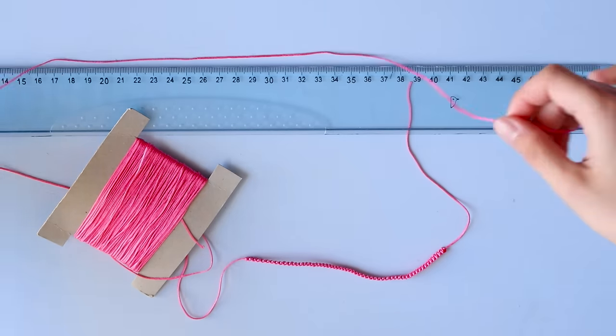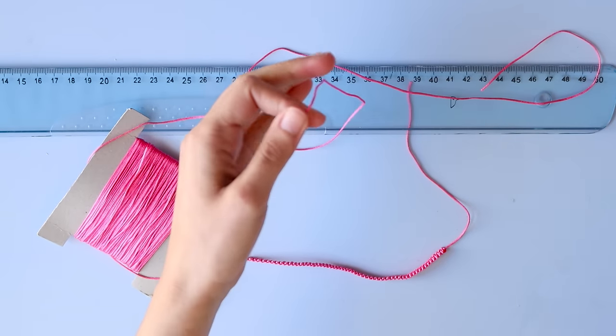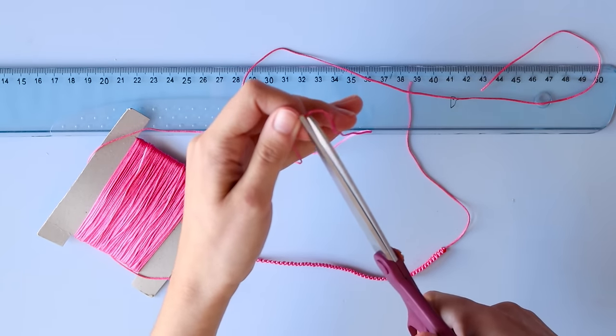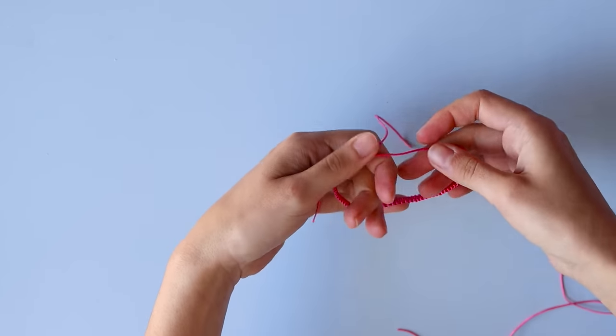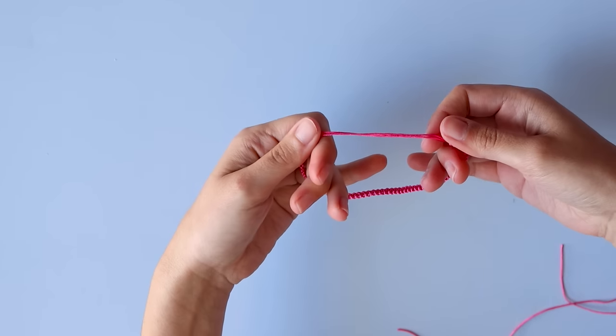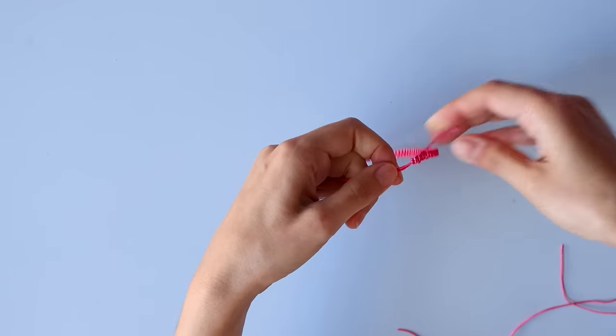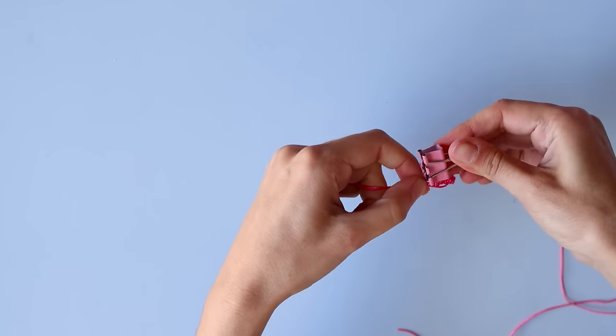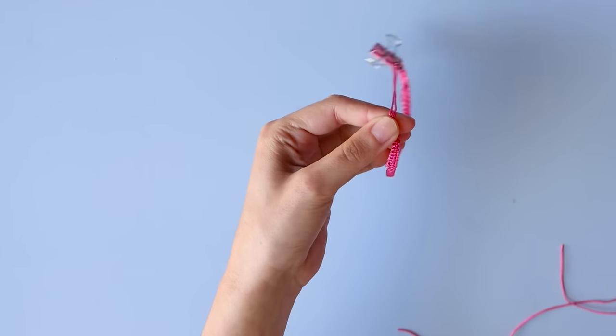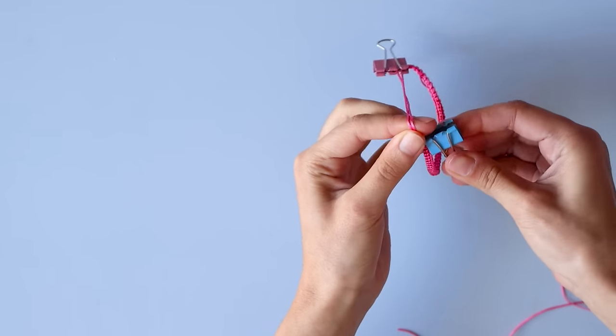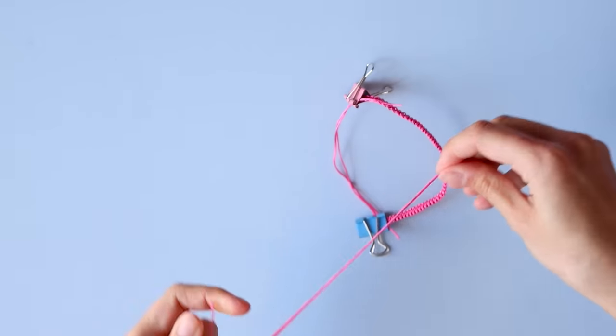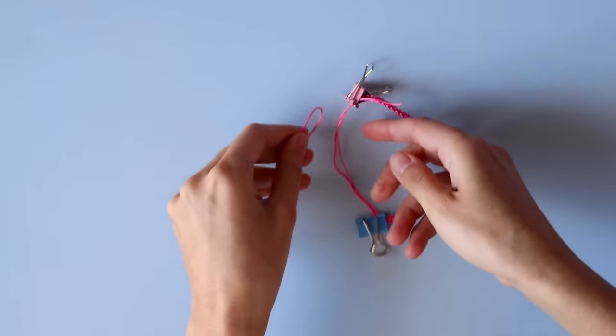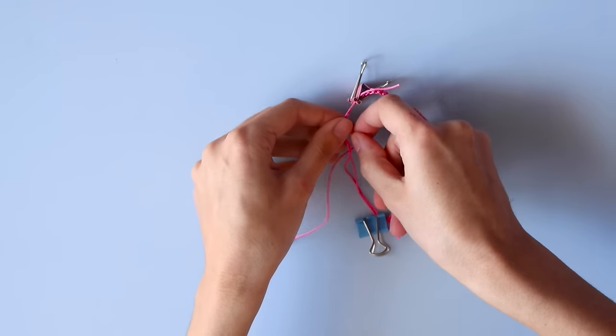Now to close the bracelet, cut another 50 cm of cord, join both ends of the bracelet and hold them in place with two clips. Then fold the cord in half and place it behind the ends of the bracelet.